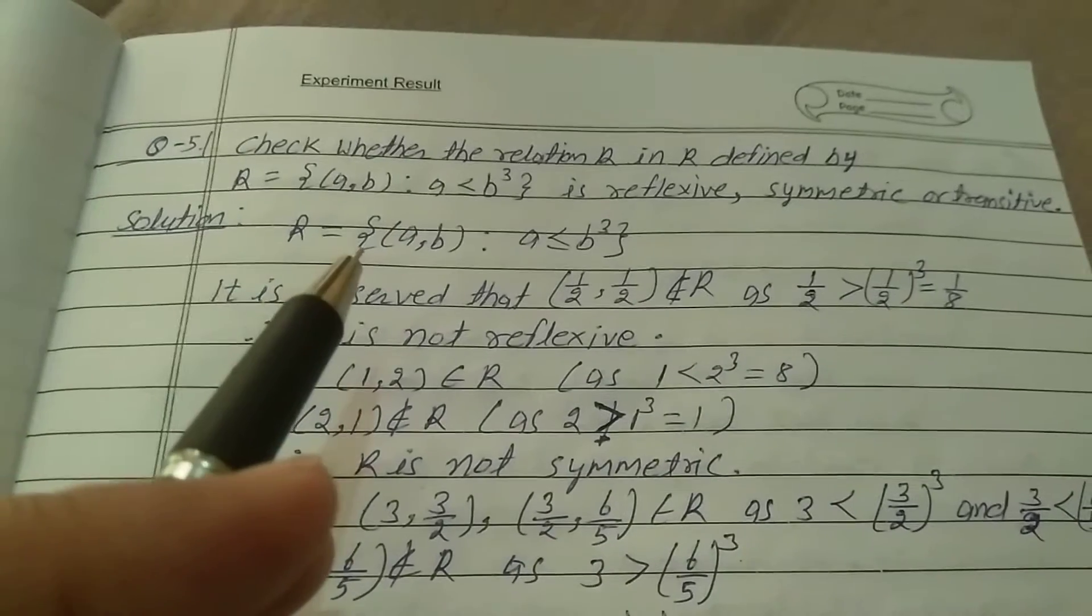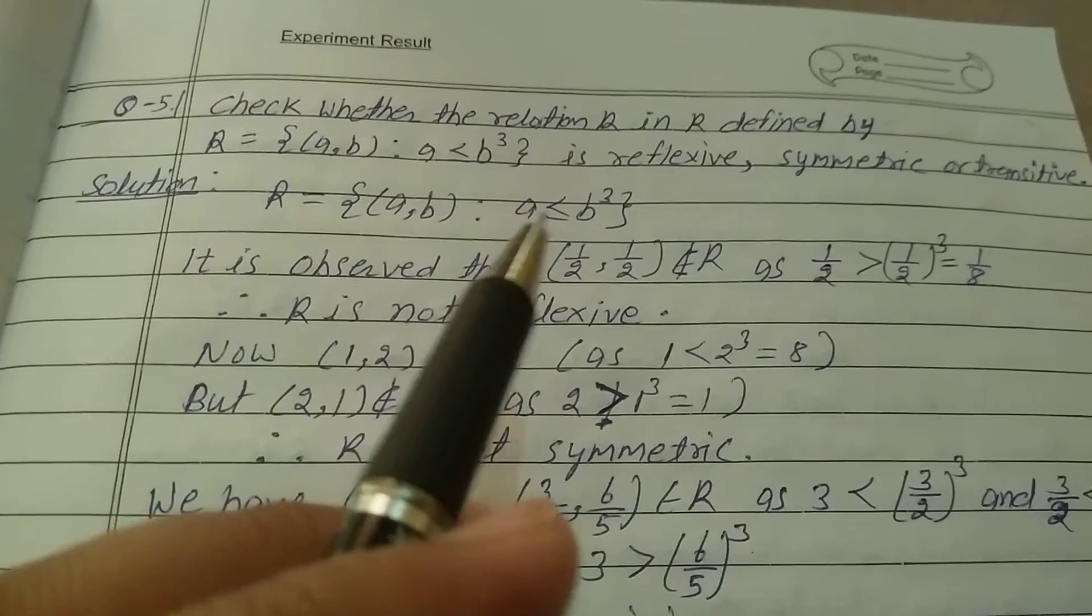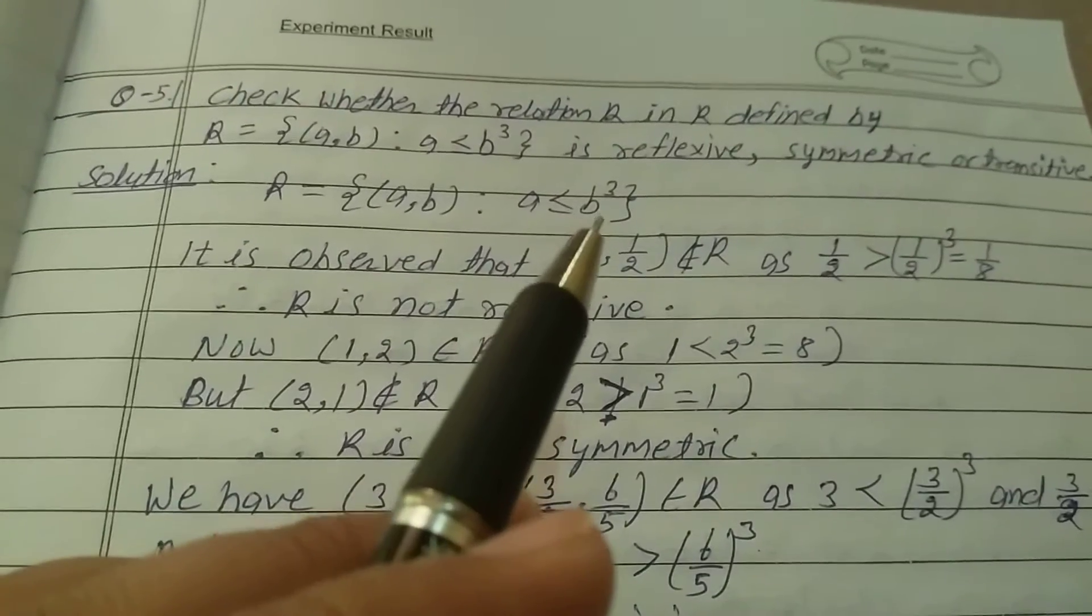Solution: R equals braces (a, b) where a is less than or equal to b cube.